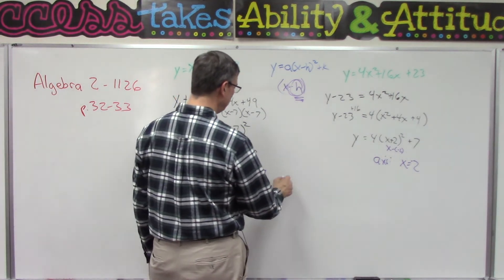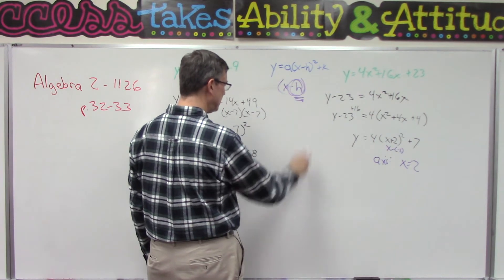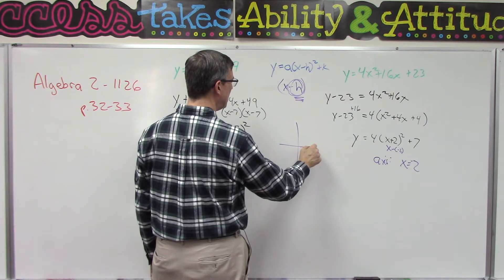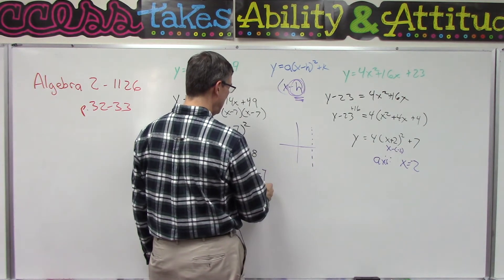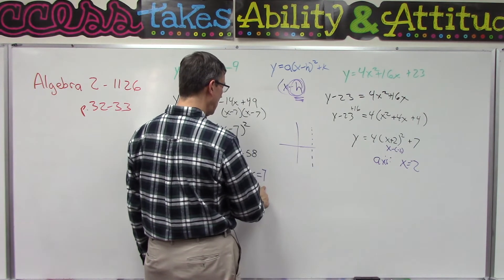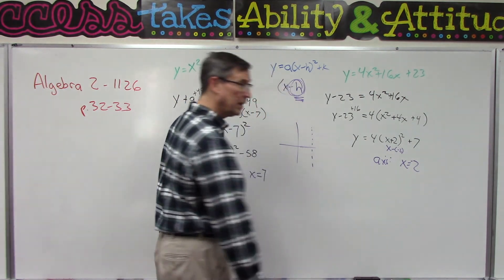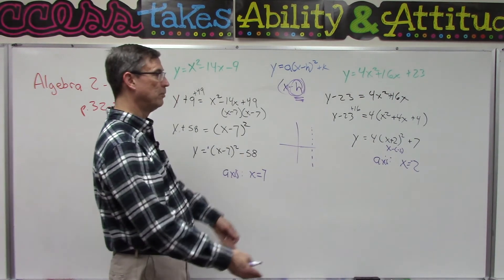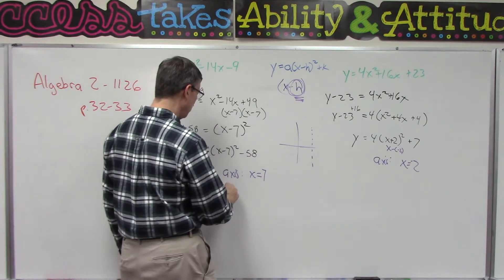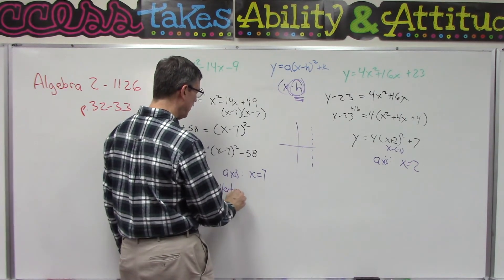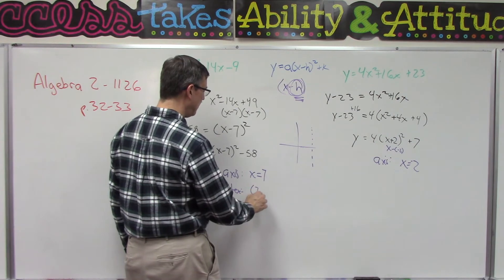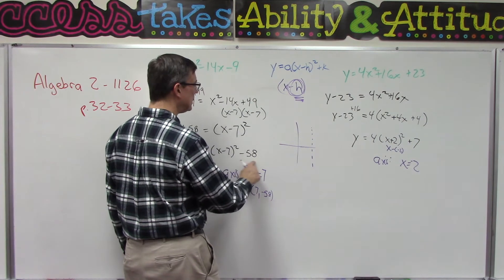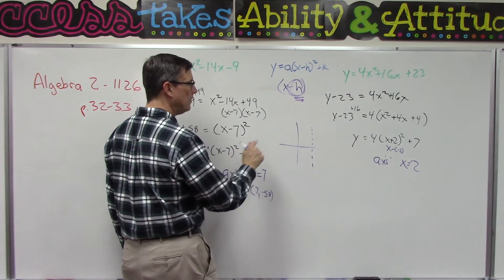So this is kind of a weird one. On this axis of 7, imagine if I had a graph here, 1, 2, 3, 5, 6, 7, here would be the axis of symmetry. On this positive 7 axis, way down here at negative 58 would be the vertex. And then from there it opens up. But all we have to label is the address, we don't have to graph it thankfully. So we would say 7 because that's the X value, and then negative 58 is the K value.